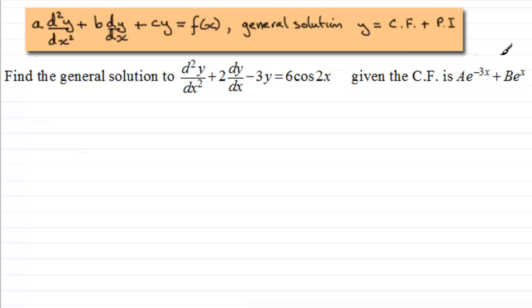Okay, so first of all we need to work out what the particular integral is going to be. So PI then for short. Now when we're dealing with trigonometric functions of the form say m cos nx if you like, in this example 6cos2x.